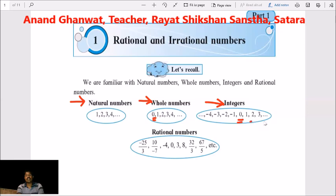And right to the 0 there are positive numbers. Left to the 0 there are negative numbers. So we have learnt that integers: negative 4, negative 3, negative 2, negative 1, 0, 1, 2, 3, 4 and so on.